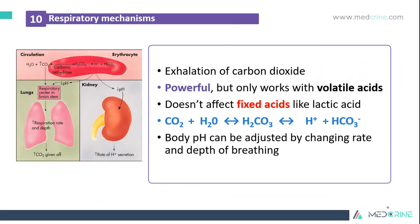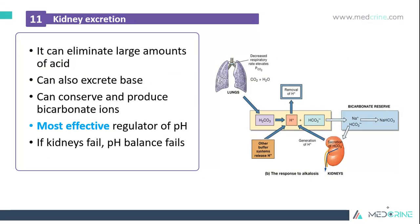The physiologic mechanisms that help in adjusting or correcting pH changes include respiratory mechanism and renal mechanism. The respiratory mechanism mainly focuses on the exhalation of carbon dioxide. It is a powerful mechanism but only works with volatile acids and generally does not affect fixed acids, for example lactic acid. The body pH can be adjusted by changing the rate and depth of breathing. The kidneys can eliminate large amounts of acid and also excrete bases; they can conserve and produce bicarbonate ions. The kidney excretion mechanism is the most effective regulator of pH, and if kidneys fail, pH balance fails.